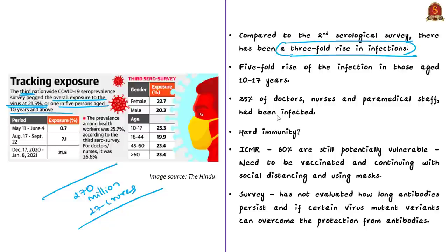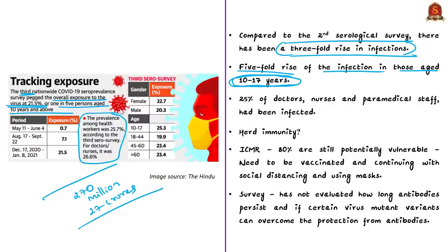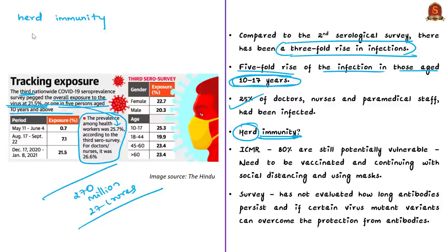What causes alarm is that there has been a fivefold increase in infection among children aged 10 to 17 years. The third edition also included a serological survey among doctors, nurses, and paramedical staff, revealing that nearly 25% of them were infected — significantly above the national average of around 21%. On one side, the spread of virus across the country is increasing in area and number of persons. On the other hand, there is also increasing herd immunity. This is a state when a significant proportion of a population in a particular area has already been infected, thereby stopping future spread.